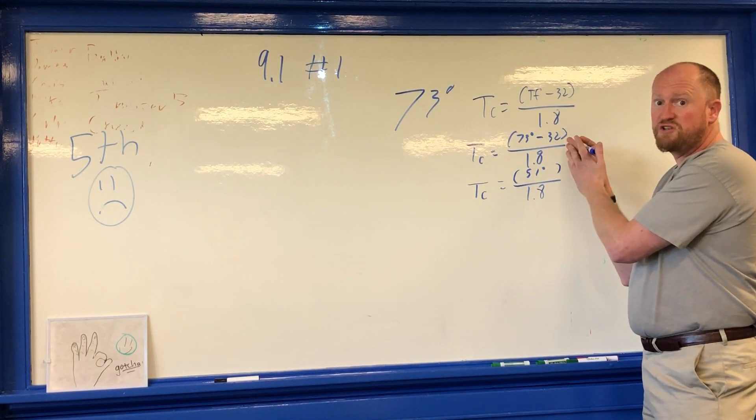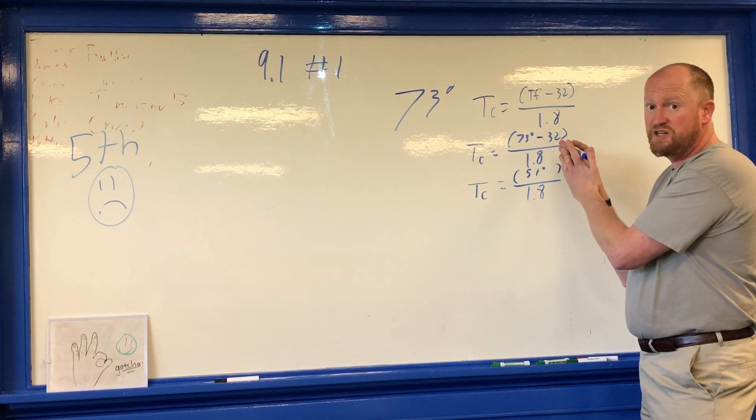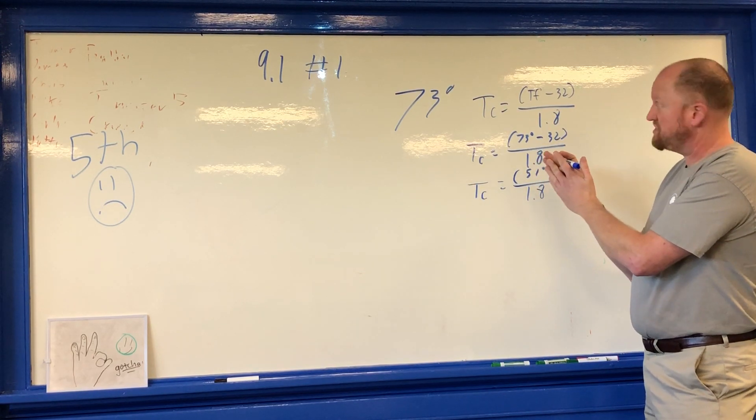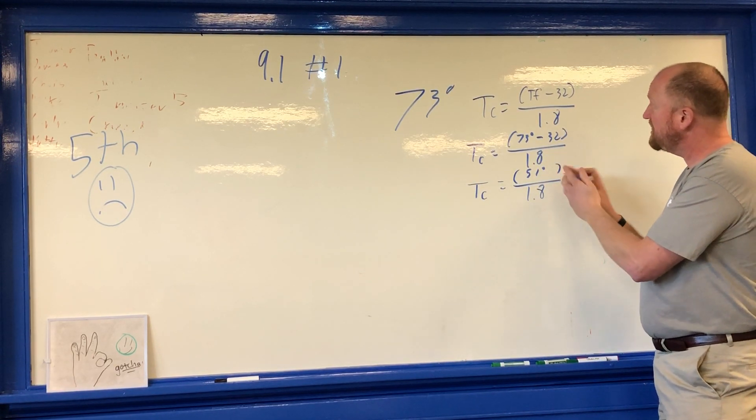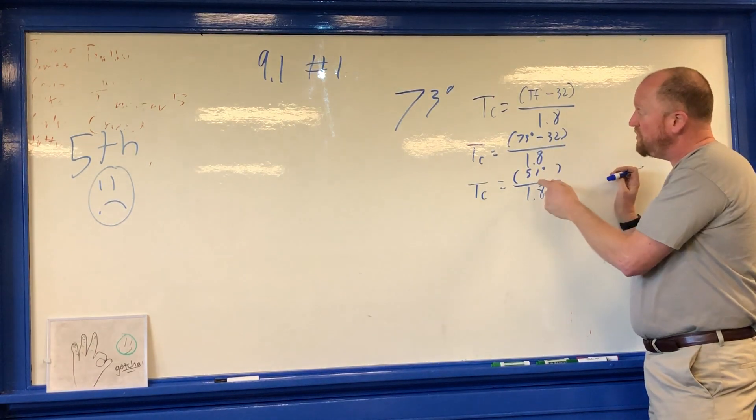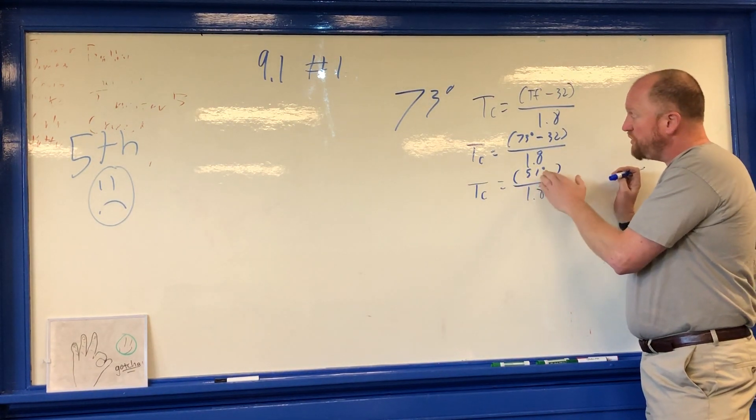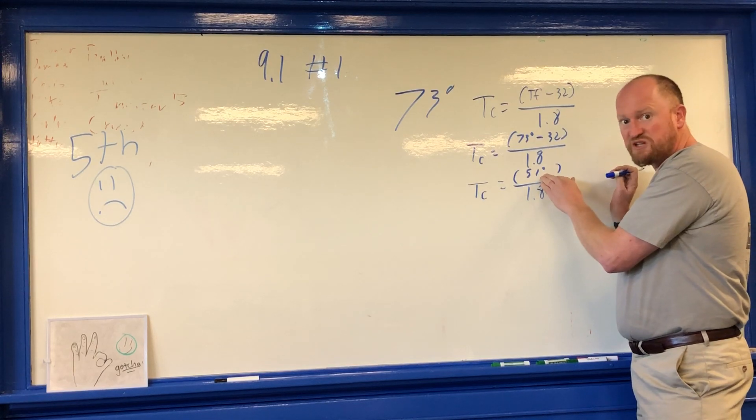Now what does that 41 degrees mean? Water freezes at 32 degrees Fahrenheit, zero degrees Celsius. So what I'm saying is that by taking away 32, that means that our temperature is 41 degrees Fahrenheit above freezing.